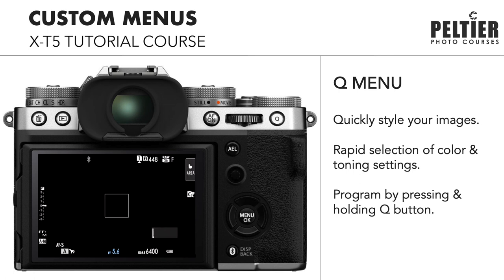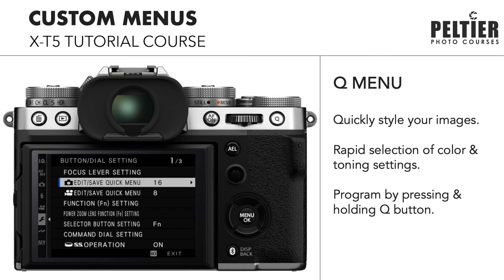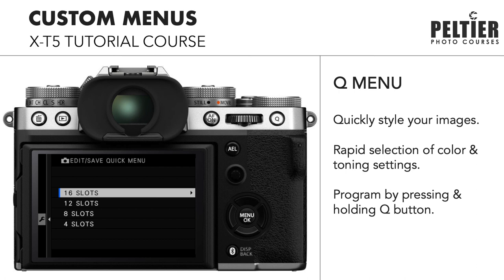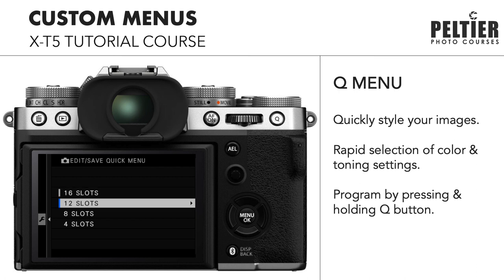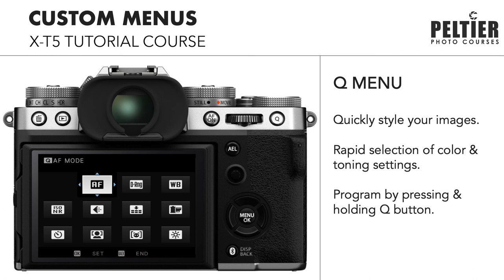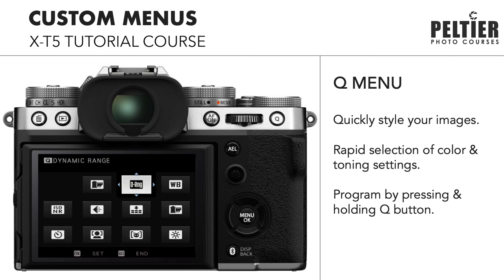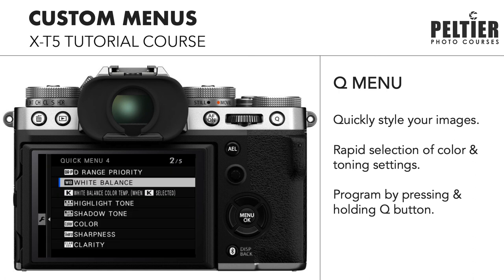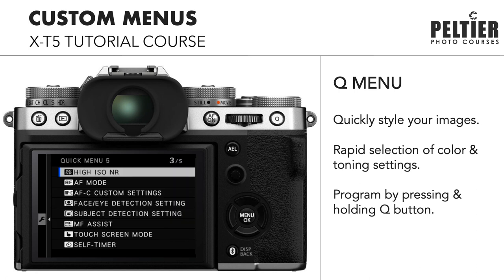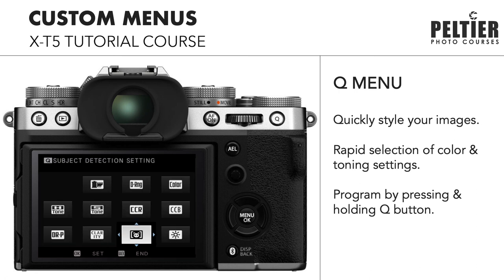To program the Q menu, go into the setup menu, button dial setting, then edit/save quick menu. There are separate Q menus for still photography mode and movie mode. The Q menu can contain 4, 8, 12, or 16 slots — all but the first one are customizable, as that first slot is reserved for the custom setting. To quickly reprogram the Q menu in shooting mode, press and hold the Q button. Use the joystick to highlight the slot you want to change, press OK, and select from the list which setting you want to assign. Press OK and it will show up in that slot. Repeat the process for all slots, then press the back button to save and exit.